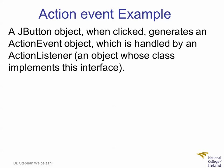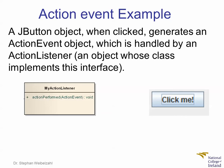I think it is probably best if we just go through a real example. What we want to create here is a JButton object, and when this is clicked, we want it to generate an ActionEvent object. That ActionEvent object is then handled by the ActionListener — handed over to it. In the graphical representation, the button is clicked, and there is the class MyActionListener, which is an ActionListener. It is registered with the button, and when the button is clicked, it creates this ActionEvent object and hands it over to the MyActionListener class.